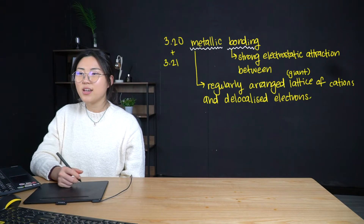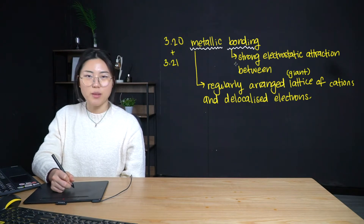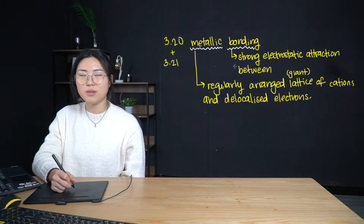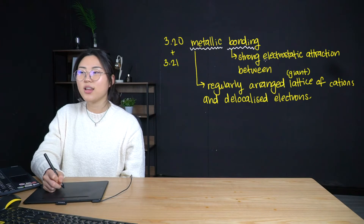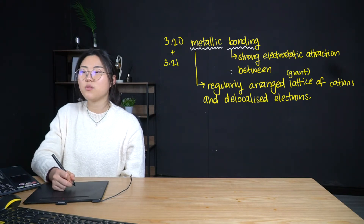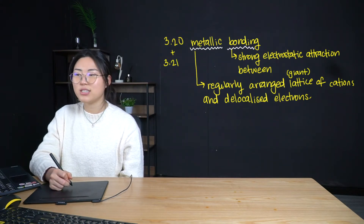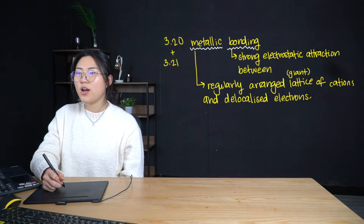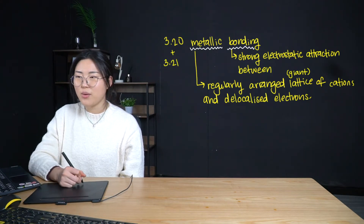So let's start right away with metallic bonding. I'm going to be defining it. We've been through covalent bonding and ionic bonding, and now we're on to metallic bonding. The bonding bit is the strong electrostatic attraction between the regularly arranged giant lattice of cations and delocalized electrons. You must memorize this definition.